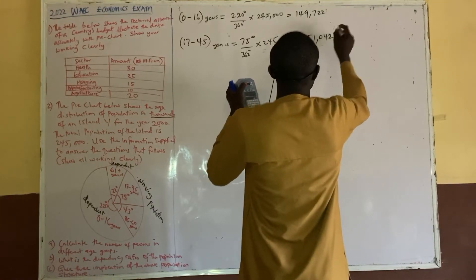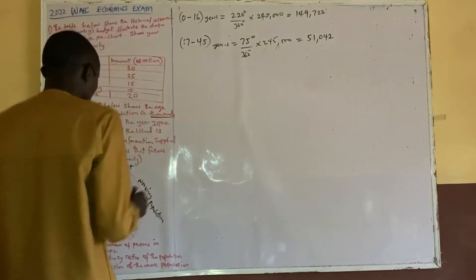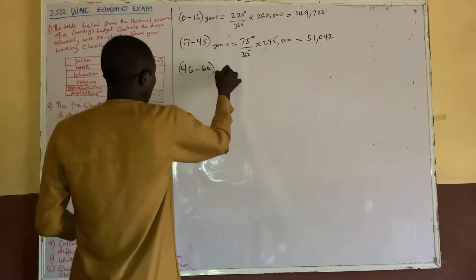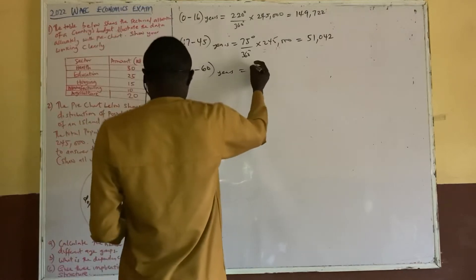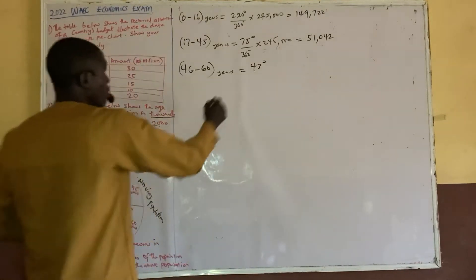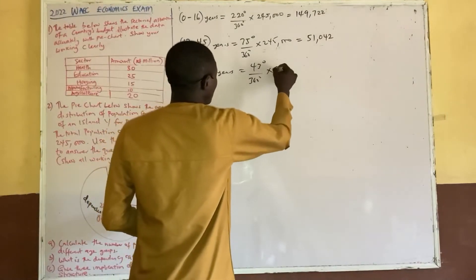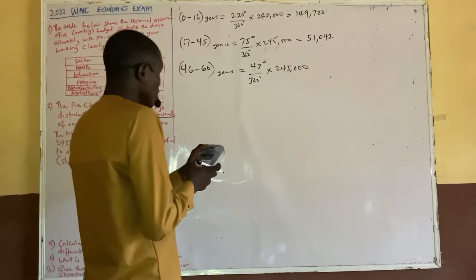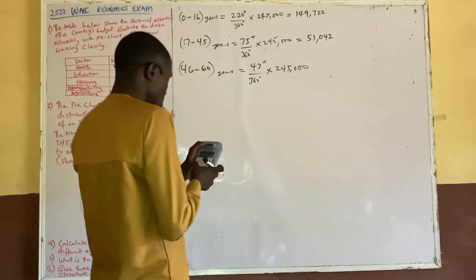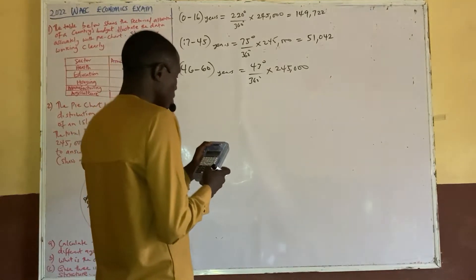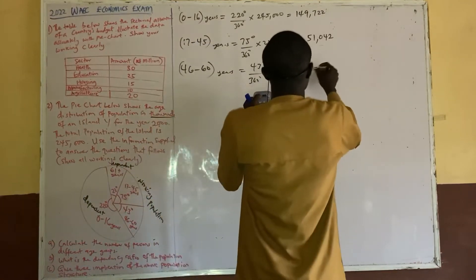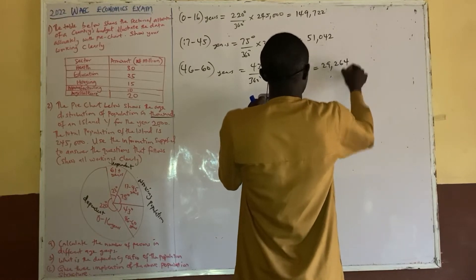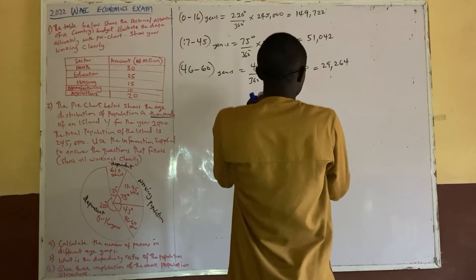The age group 46 to 60 has a sector angle of 43 degrees. So we have 43 divided by 360 multiplied by 245,000, and we get 29,264 persons.